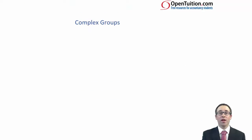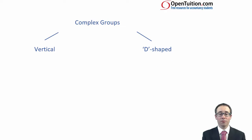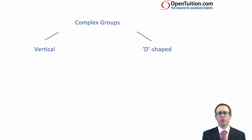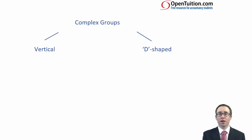There are two types of complex groups that you need to be comfortable with within the syllabus. There is what's referred to as a vertical complex group structure, which we look at first, and then we move on to think about your D-shaped complex group structure.